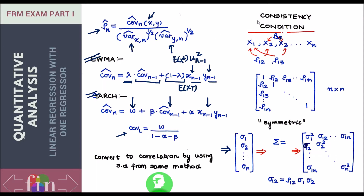Let's take a look at the consistency condition which correlations should satisfy. To understand this topic, I'll use a set of n random variables — x1, x2, all the way till xn. I'm quantifying the dependence structure between these variables via the correlation, which is a measure of linear relationship, assuming that the dependence between each of these random variables is a linear dependence.